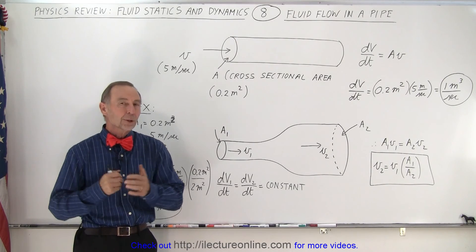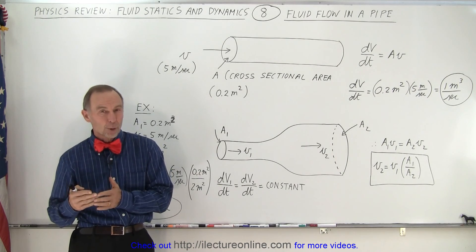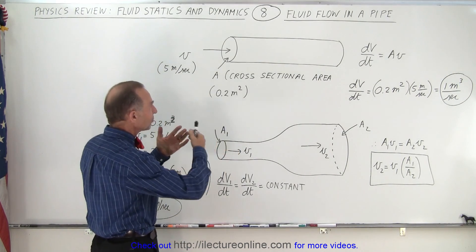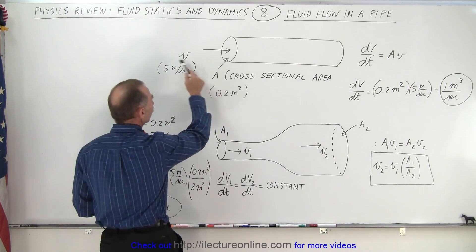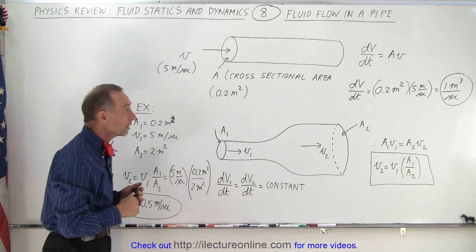Welcome to my lecture online. Here we review the basic principles of fluid flow in a pipe. So first let's say we have a pipe that is continuous in cross-sectional area and let's say that fluid is flowing through the pipe at 5 meters per second and the cross-sectional area is 0.2 square meters.